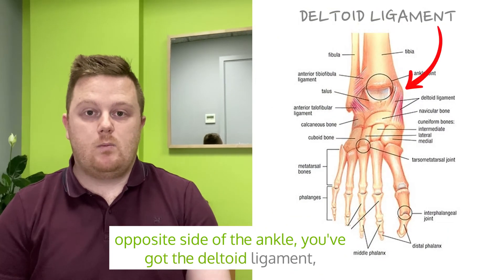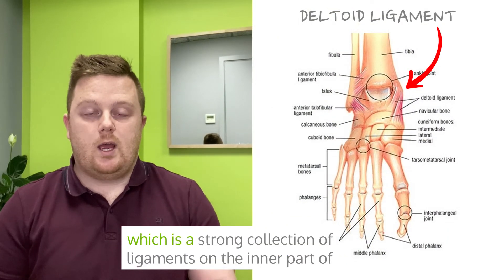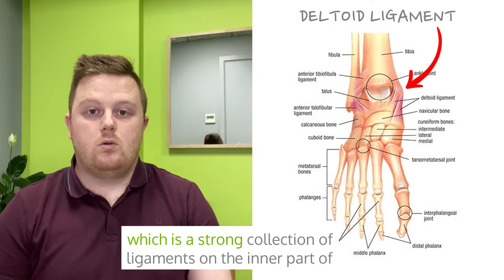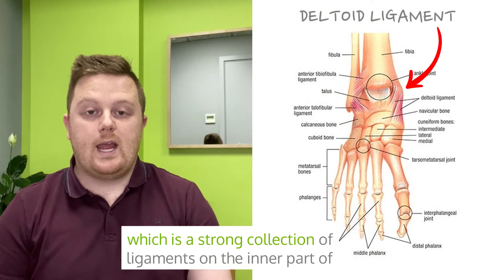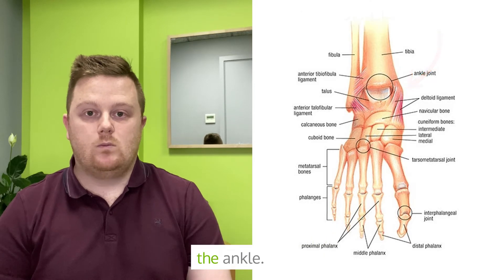On the opposite side of the ankle you've got the deltoid ligament, which is a strong collection of ligaments on the inner part of the ankle.